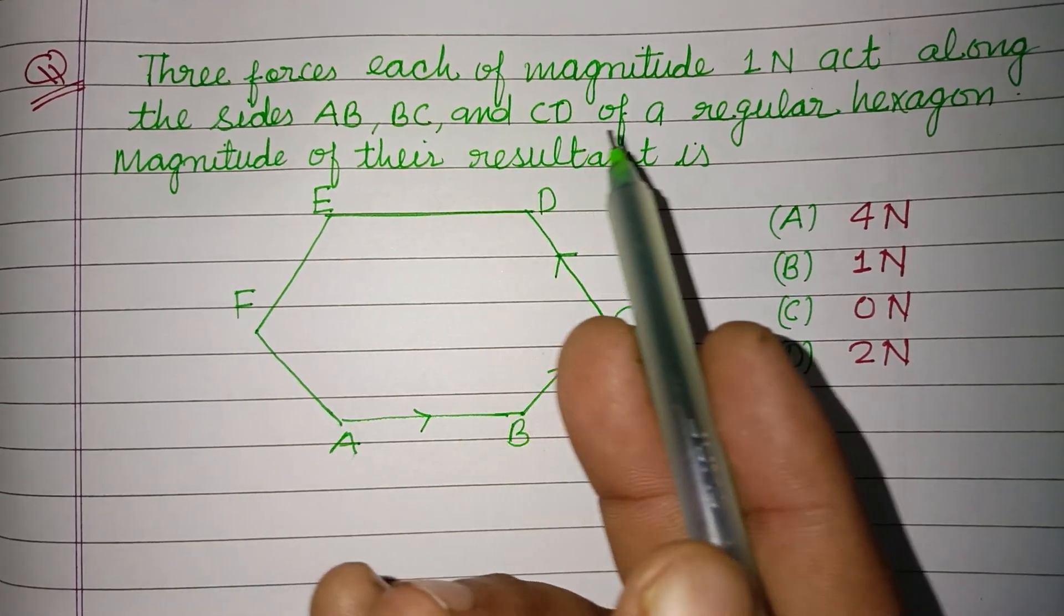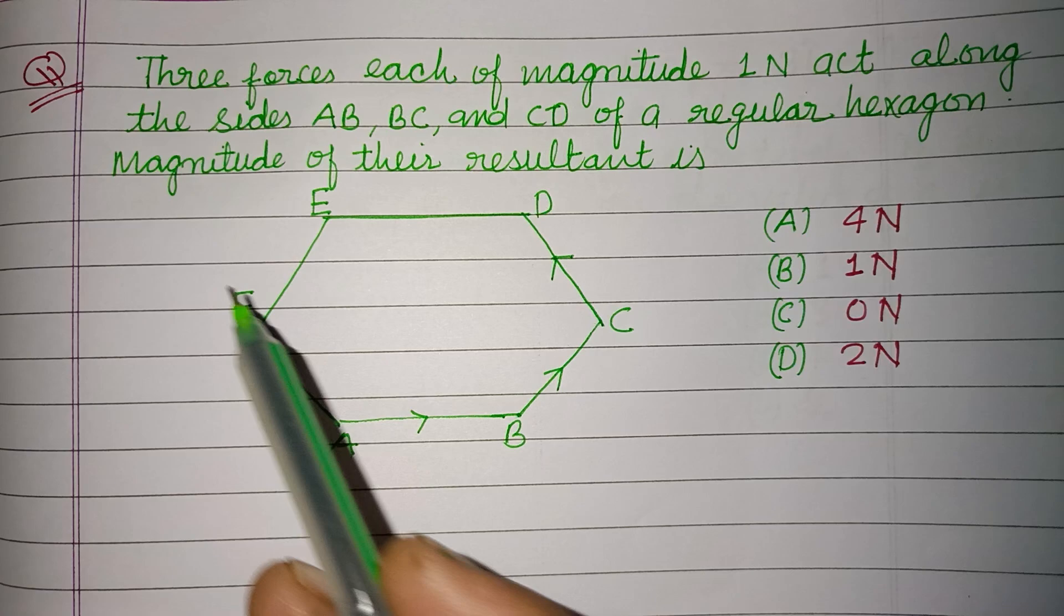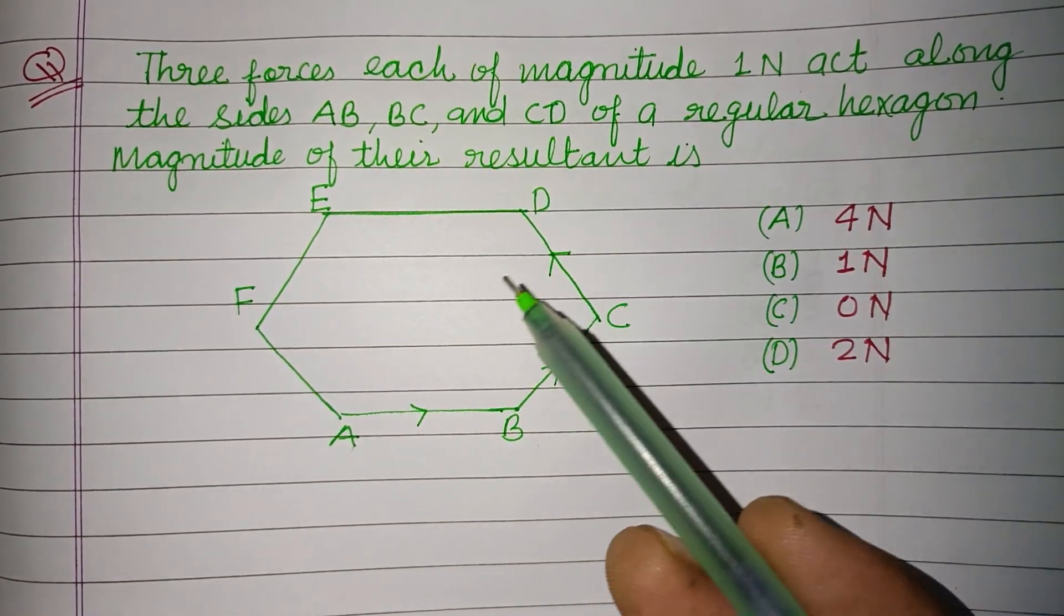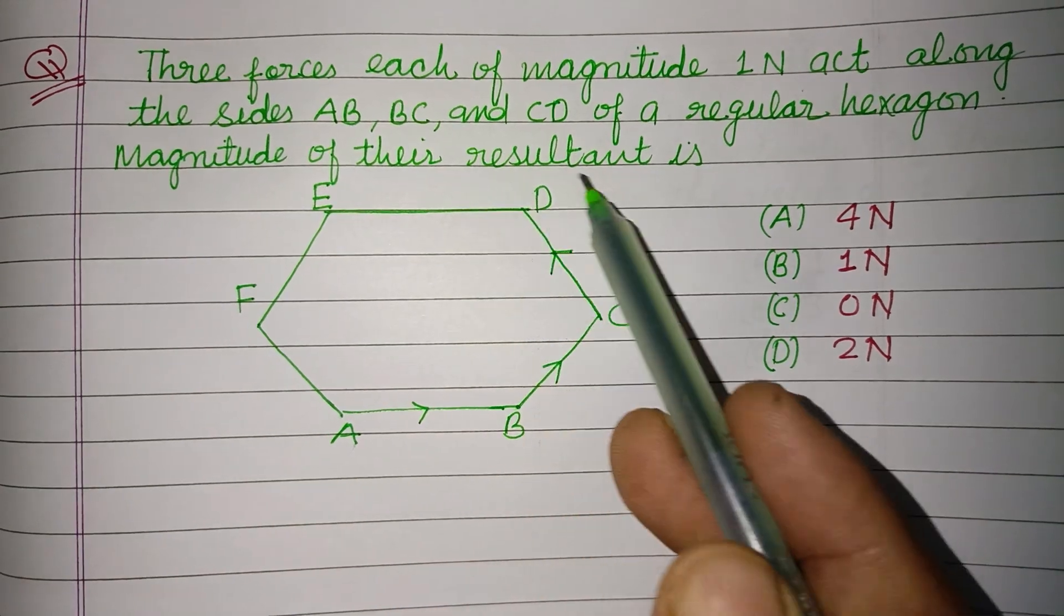3 forces each of magnitude 1 N act along the side AB, BC and CD of a regular hexagon. Magnitude of their resultant is?